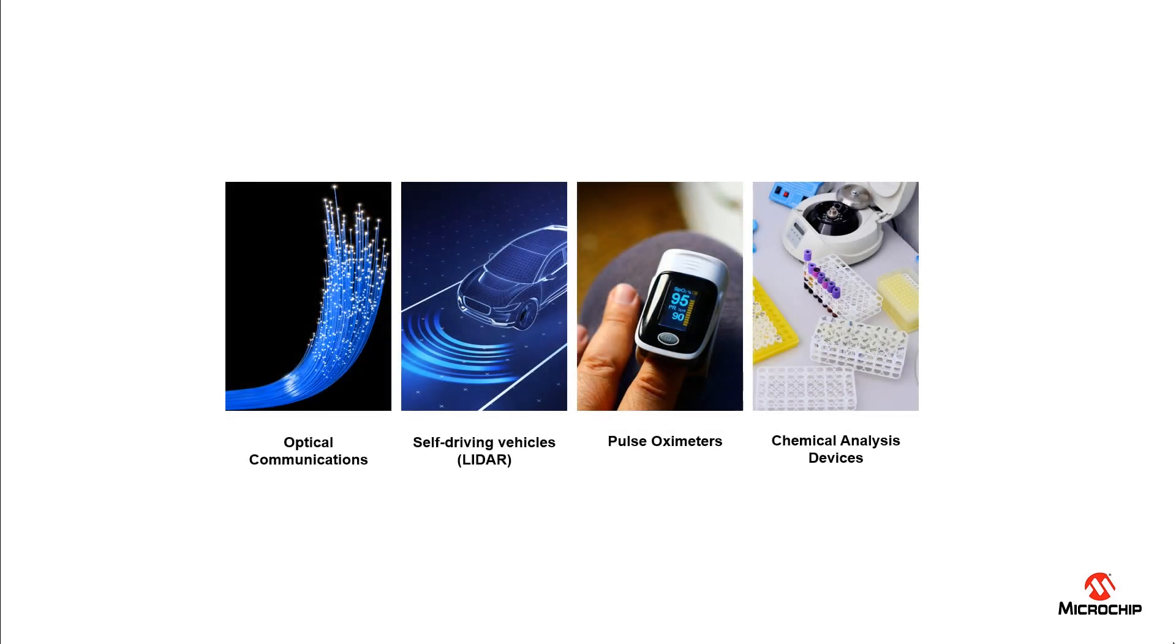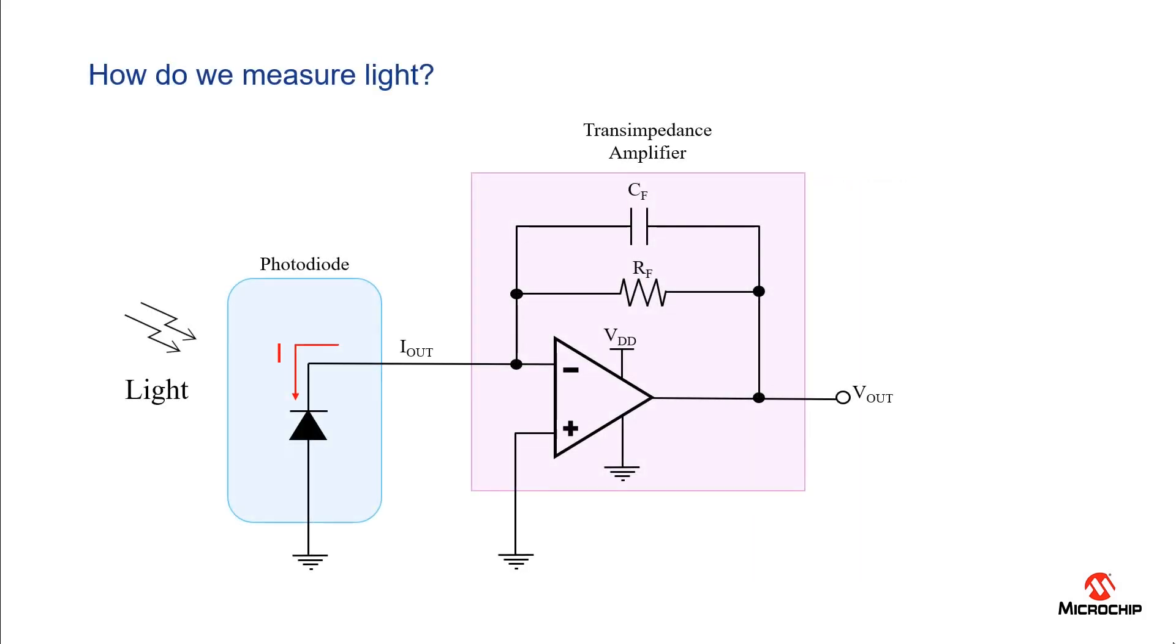Some of those light sensing applications include optical communications, self-driving vehicles, pulse oximeters, and chemical analysis devices just to name a few. All of these applications require pulses of light and photodiodes are one of the most reliable and cost-effective photodetectors.